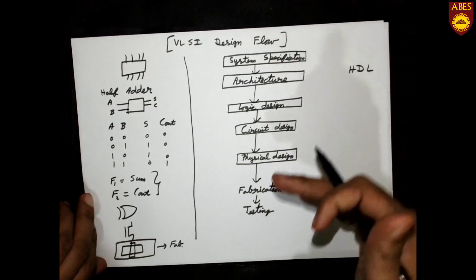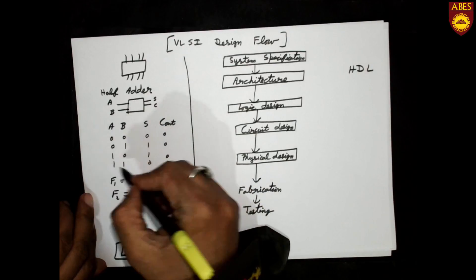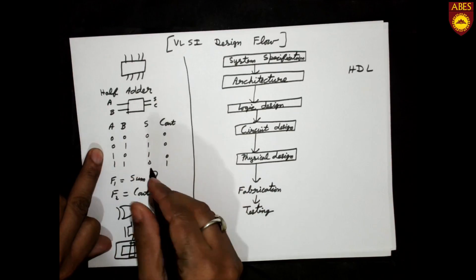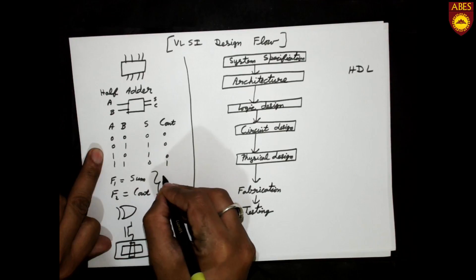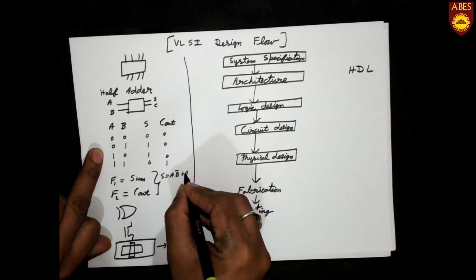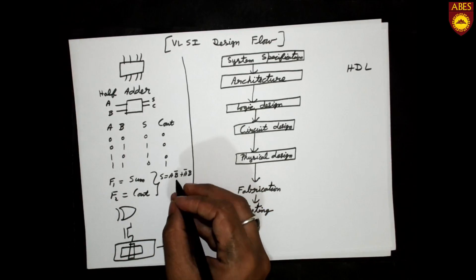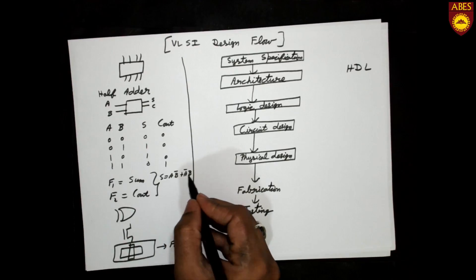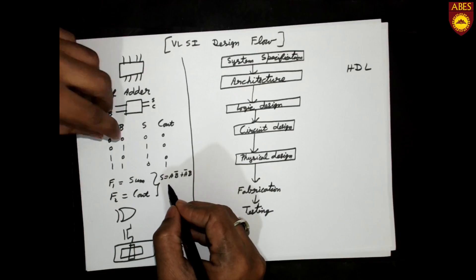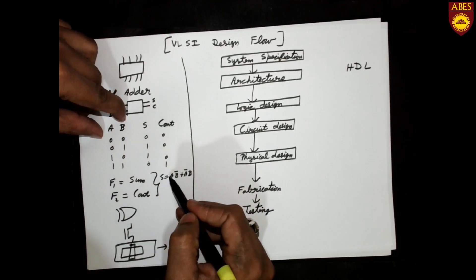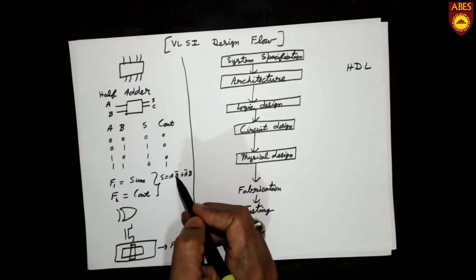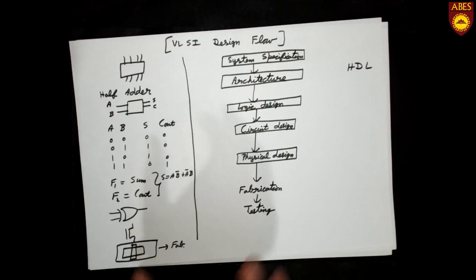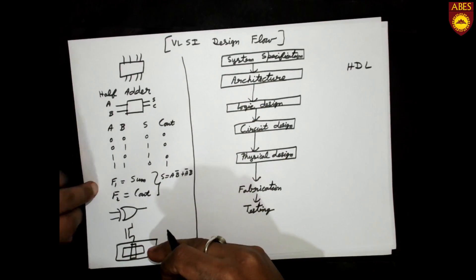One important thing: at each and every stage, verification must be performed. For example, when you write the truth table, you can verify it; when you write the Boolean expression — say sum = AB' + A'B — you can substitute values like A=0, B=0 to get 0·1 + 1·0 = 0, confirming the logic. Similarly, you can apply inputs to the circuit and verify it. The key principle is to verify each and every stage before proceeding to the next.